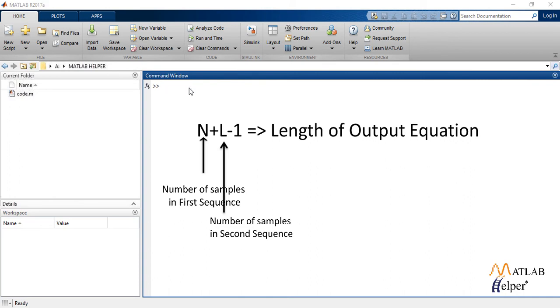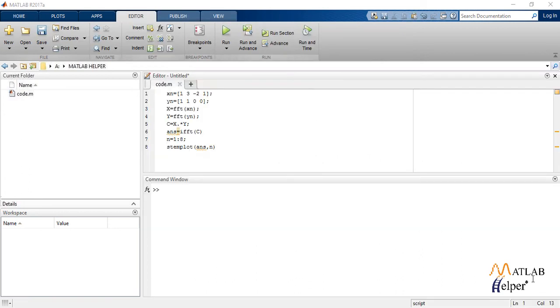Here we take both input sequences with four samples each and so the equation 4 plus 4 minus 1 is equal to 7, which is length of output sequence.